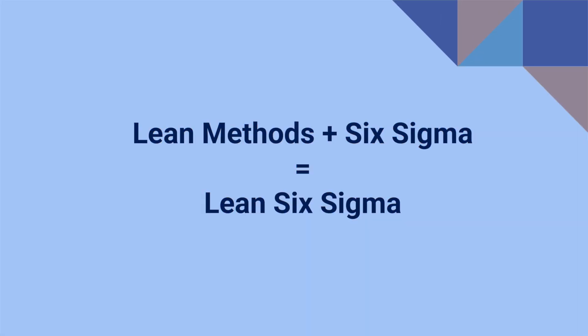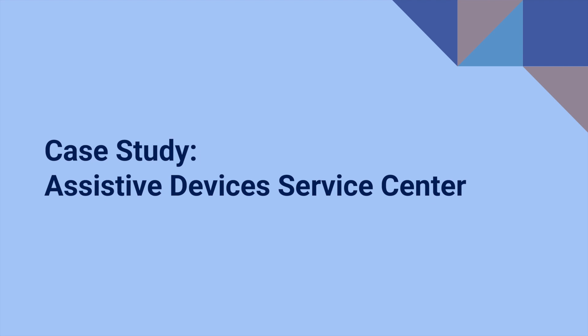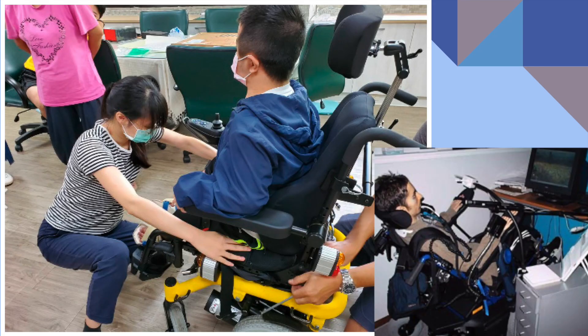Using DMAIC, Lean Six Sigma is the combined use of lean methods with Six Sigma practices in a five-step process which proceeds as follows: defining the project objectives and customer needs; measuring errors and process performance and quantifying problems; analyzing data and finding the causes for defects; improving or correcting the causes of defects and reducing errors; and controlling the process and maintaining performance. This case study examines the existing production processes of an assistive devices service center.